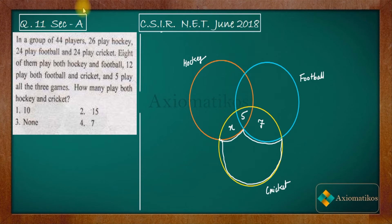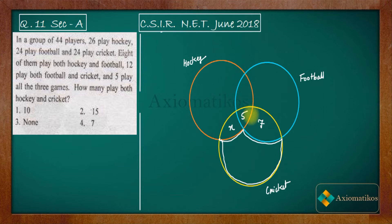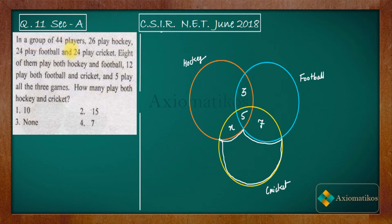The players who play hockey and football are 8, so 8 players play both hockey and football. Since 5 are already included in the center, the remaining hockey-and-football-only area has 8 minus 5, which is 3 players. We know that 26 play hockey, 24 play football, and 24 play cricket.